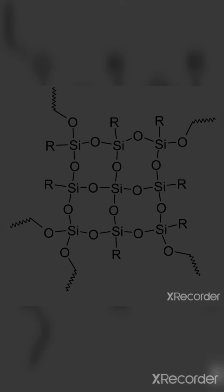Cross-linked silicones are obtained by the hydrolysis of R₂SiCl₃ or RSiCl₃. This gives the cross-linked structure of cross-linked silicones.